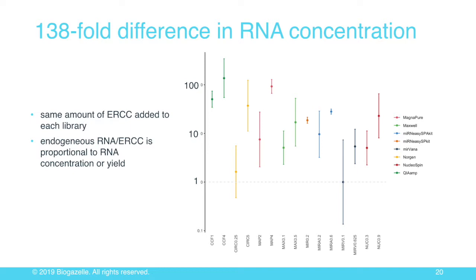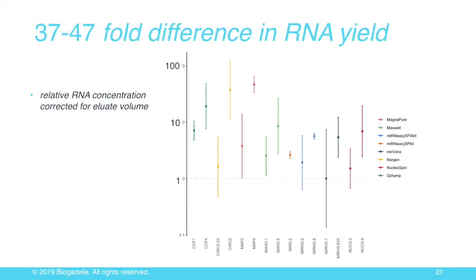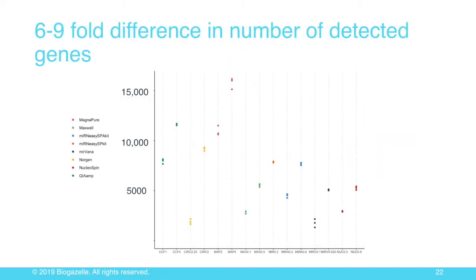There is about a 100-fold difference in RNA concentration between the best- and worst-performing kit. Even controlling for elution volume, there's still about a 40- to 50-fold difference in RNA yield. If you do sequencing, the worst-performing kit gives about 2,000 to 3,000 genes reproducibly detected in 200 microliters of plasma, versus up to 15,000 with the best kit. So if you're doing liquid biopsy studies with small input volumes, you had better use the kit that maximizes detection sensitivity.